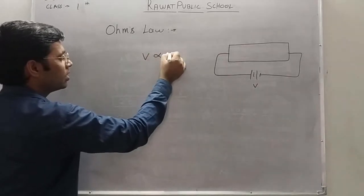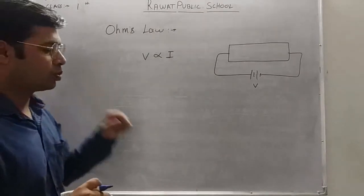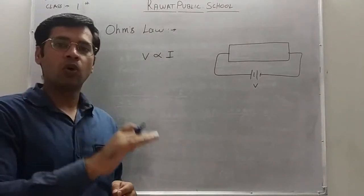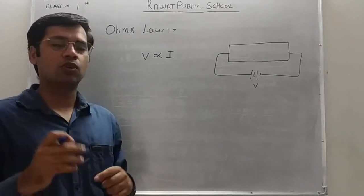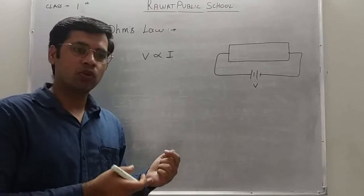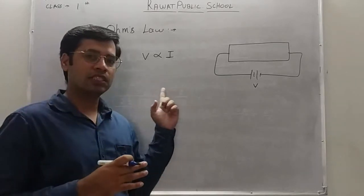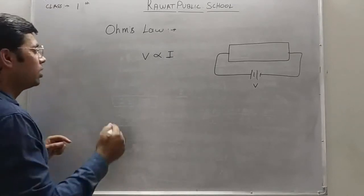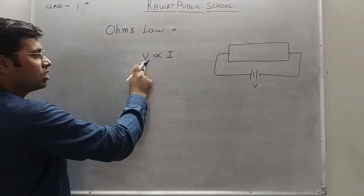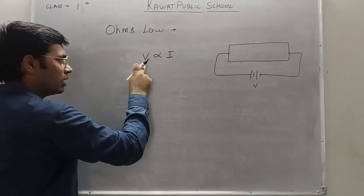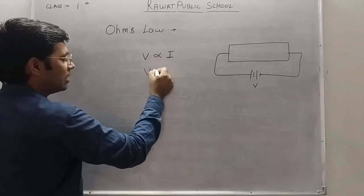Mathematically we write it as V proportional to I, when we are keeping all the physical quantities constant. The current flowing through a conductor is directly proportional to the applied potential difference.